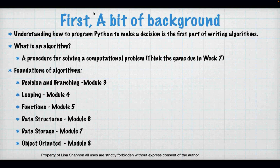This is our first foray into writing algorithms. An algorithm is a set of lines of code used to figure out a computational problem. A computational problem can be many things. What you'll have to turn in on week seven is your project, and everything we're doing this week and every other week is building toward the information you'll need for that project. This week we're doing decision and branching.